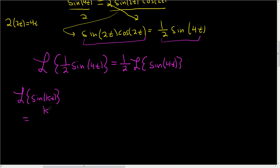If it was cosine, you get an s up top, but it's the sine, so you get the k. And here you have s squared plus k squared. So this will be one half, and k is 4. So you get 4 over s squared plus 4 squared. The one half cancels with the 4, so you get 2 over s squared plus 16. And that's it.